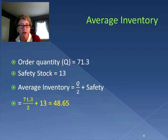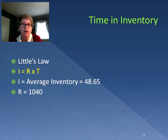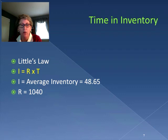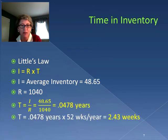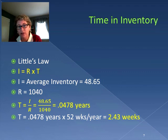To find how long an average unit spends in inventory, we use Little's Law: I equals R times T. We have the average inventory of 48.65 and the throughput, which is the annual demand of 1,040. Time in inventory equals I over R, which gives us 0.0478 years. Converting to weeks by multiplying by 52, we get 2.43 weeks.